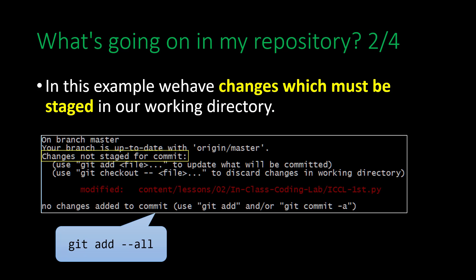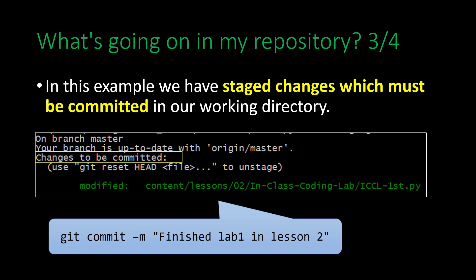Now let's suppose we go out and do some work — we edit some files, do some homework, etc. When we're done, we type git status again and now you'll notice it says changes not staged for commit. This tells us that we have things that we have changed, but we have not told Git to track them. To tell Git to track them, you type git add --all. If you type git status after you've staged the files, you'll see that you have staged the changes, but they have not been committed.